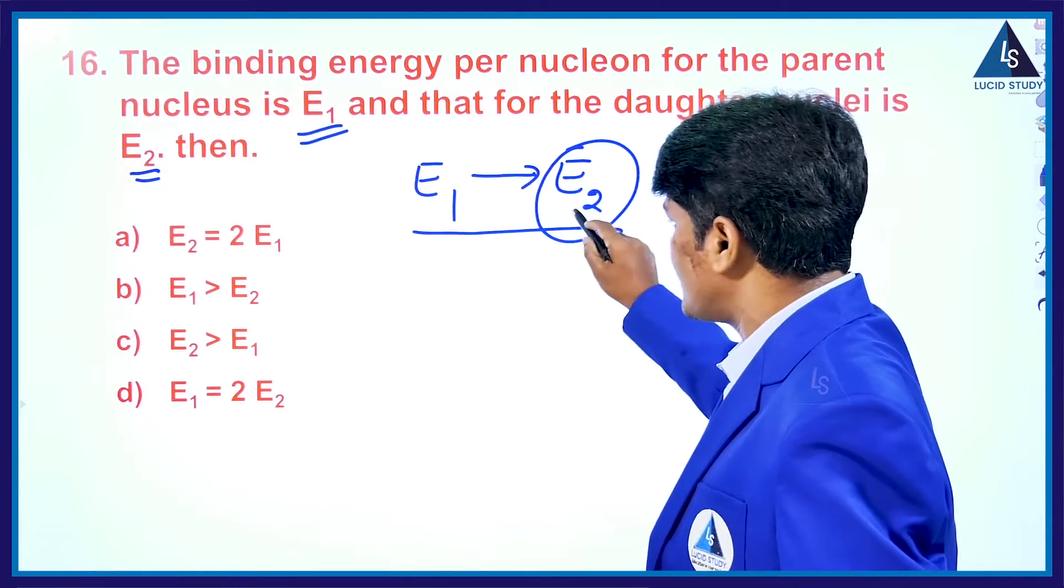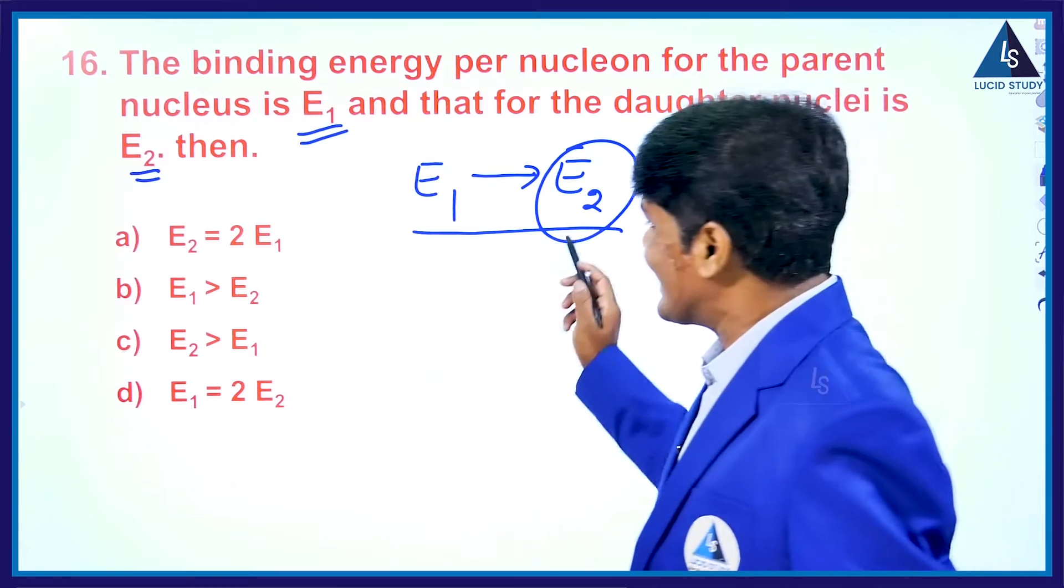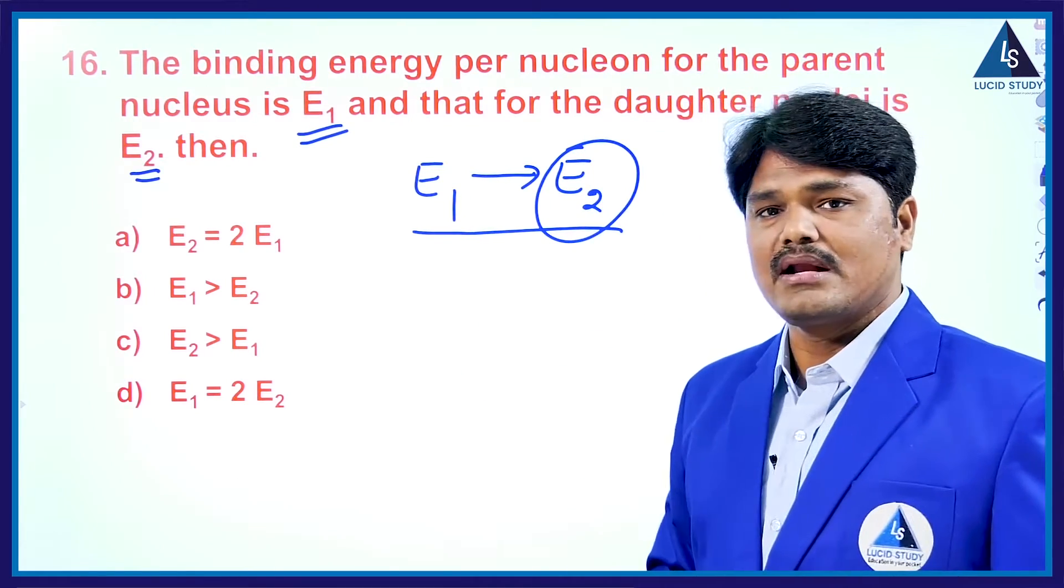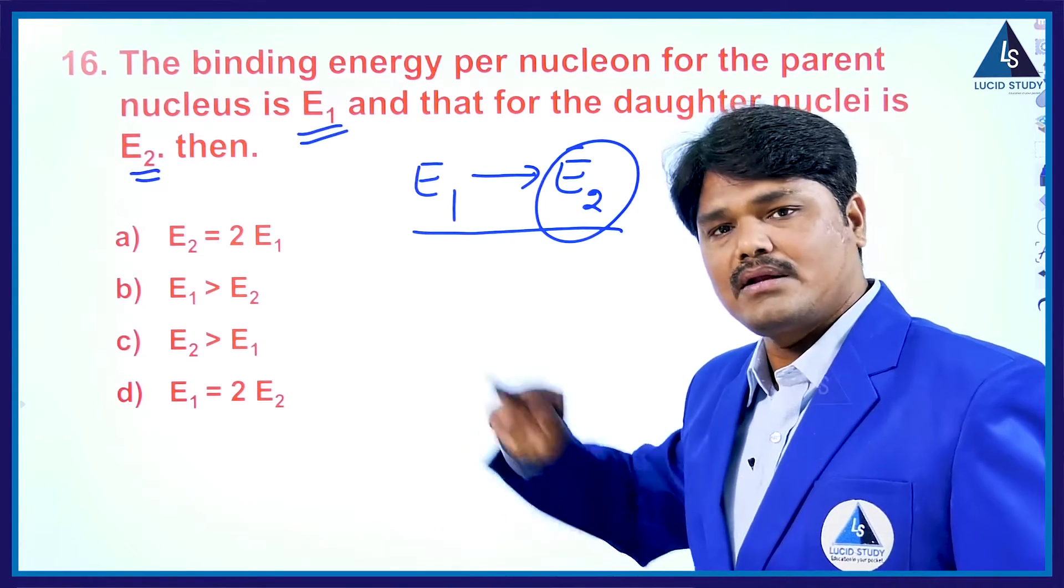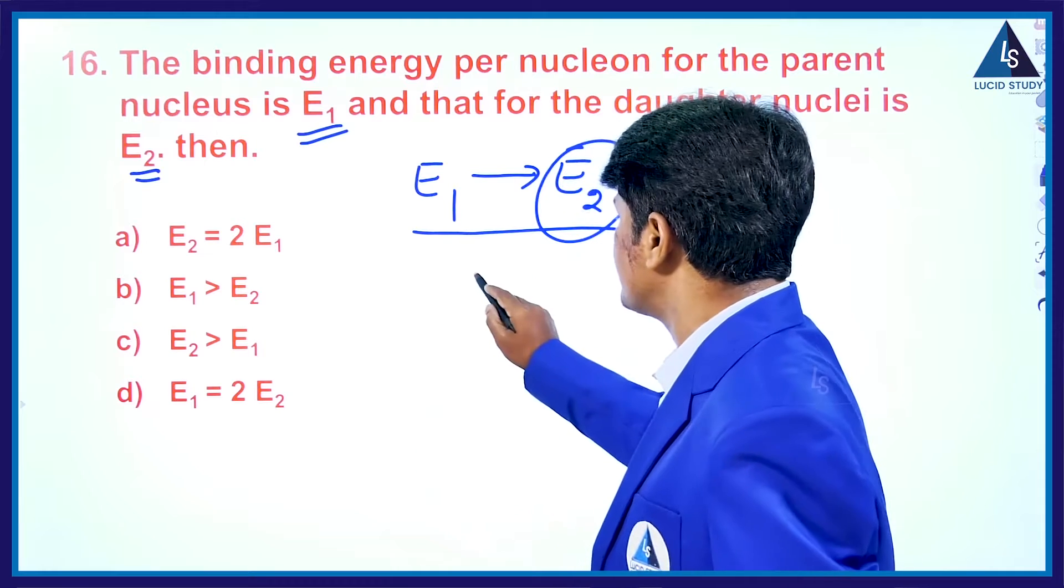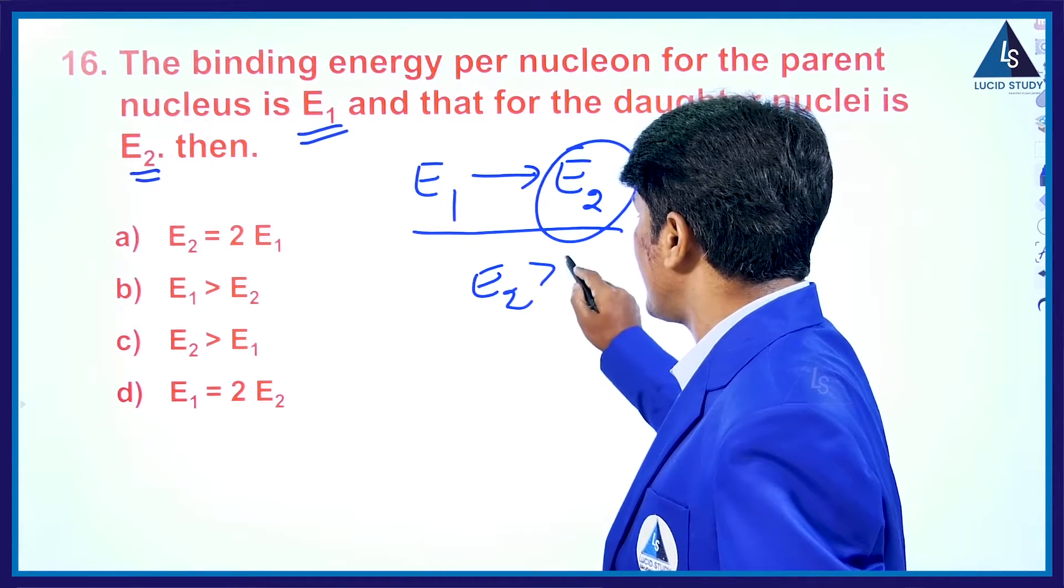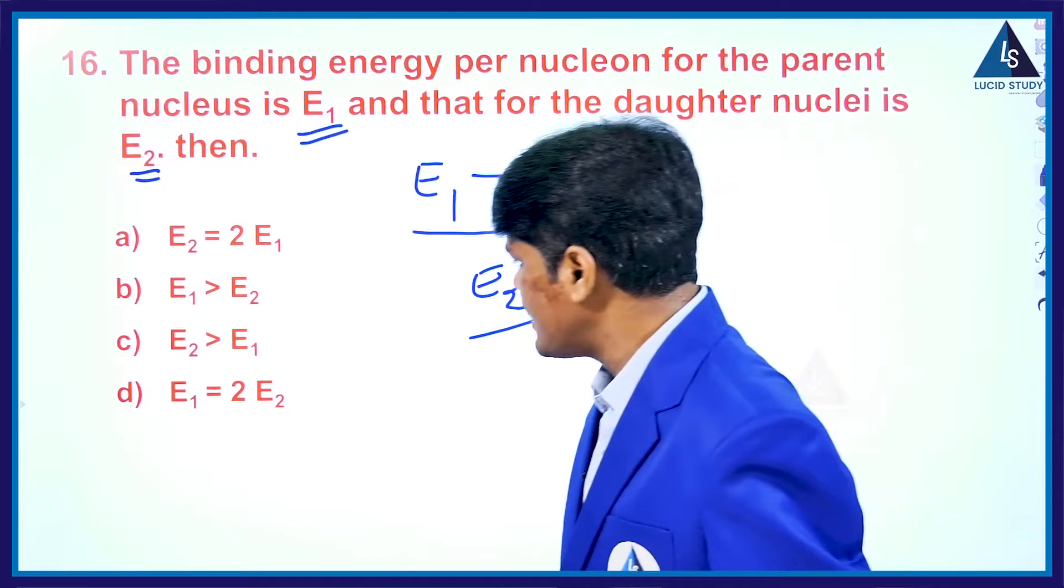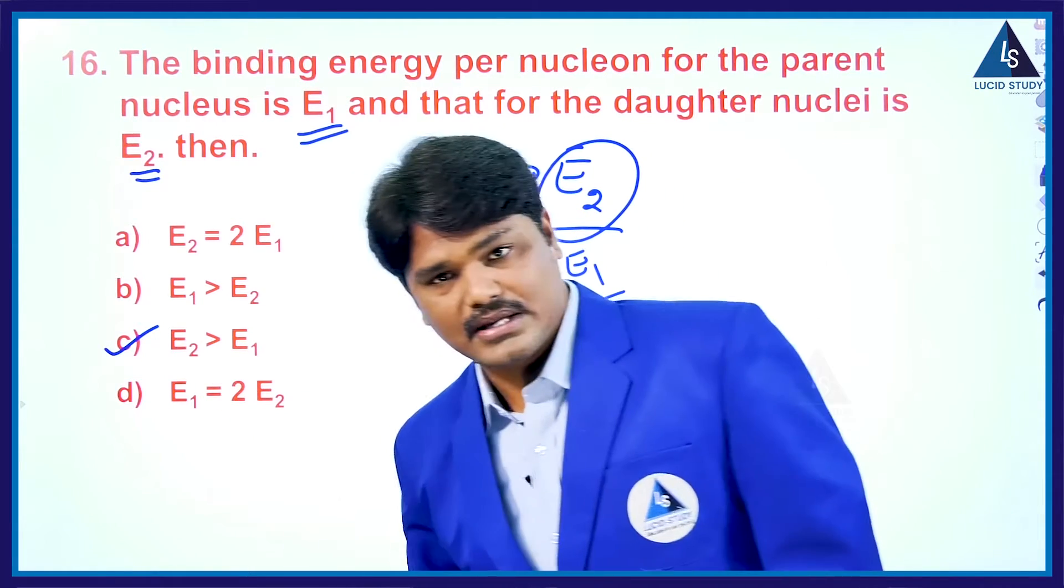Then the binding energy per nucleon of daughter nucleus will be greater than the binding energy per nucleon of the parent nucleus. Simply, E₂ is greater than E₁. So E₂ is greater than E₁, so that option is correct here.